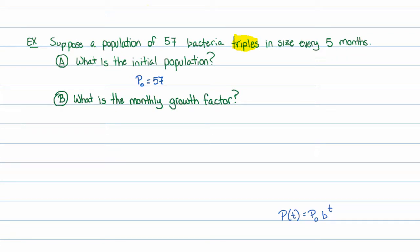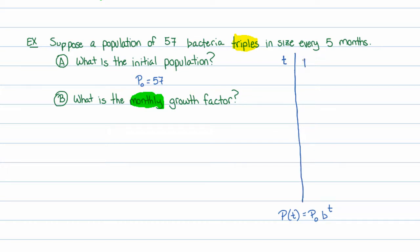Part b is a little more challenging. The keyword here is 'monthly' — what is the monthly growth factor? We know that the growth factor is 3 for every 5 months, but the monthly growth factor is a little bit different. A great way to approach this is to write out a table of values to show the pattern.